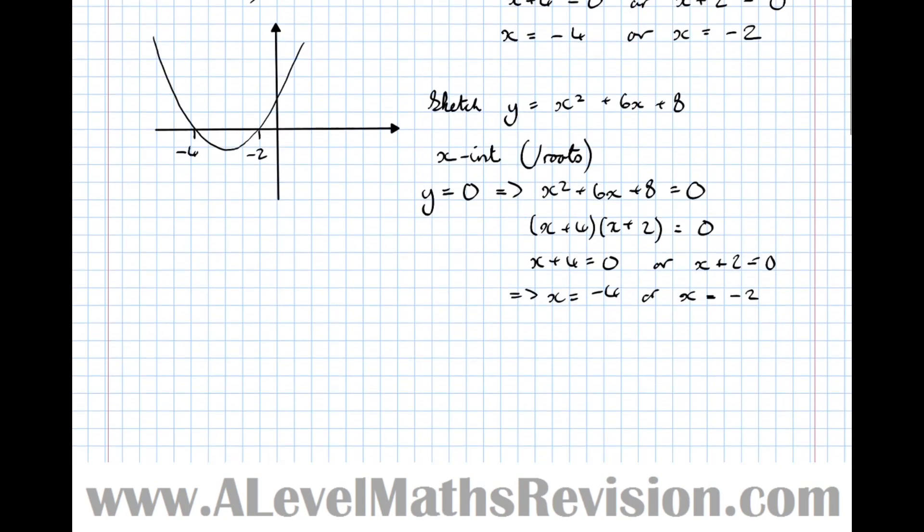Now we're looking for the y-intercept. The y-intercept happens when x = 0. Therefore we've got y = 0² + 6(0) + 8, which equals 8. But we knew that because it's just the number on its own. That's what makes a good sketch of a quadratic. That's a recap of the grade 6 and 7 stuff from GCSE.